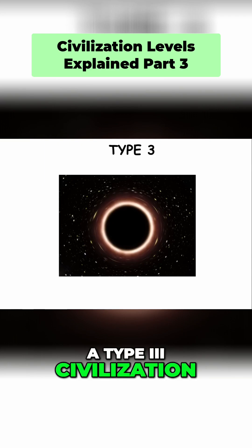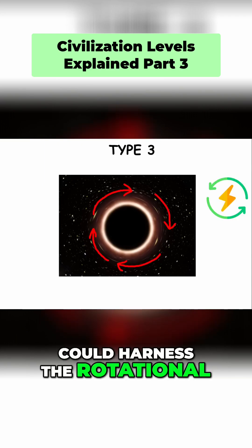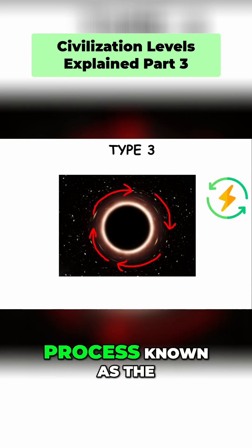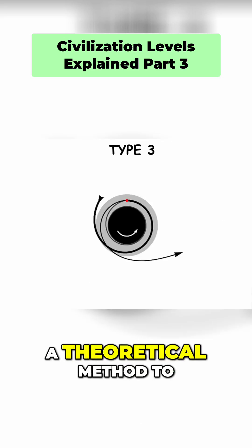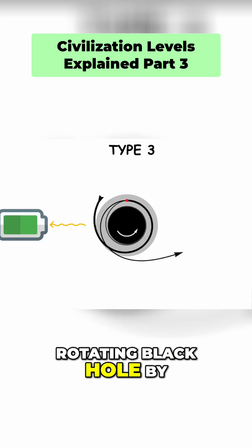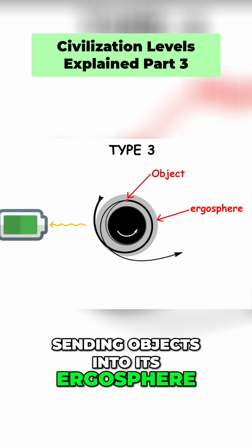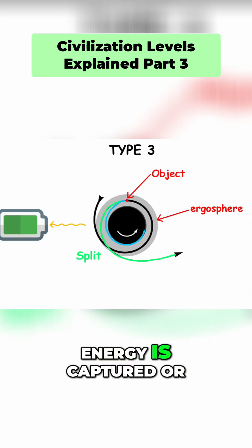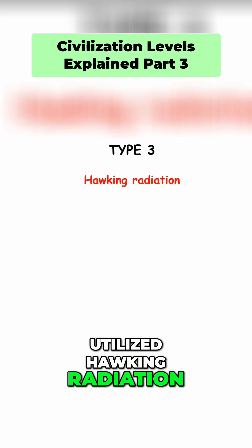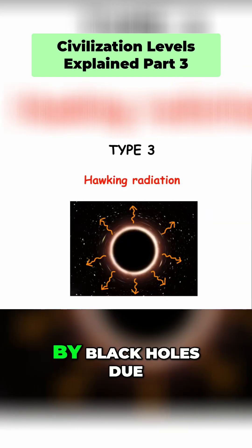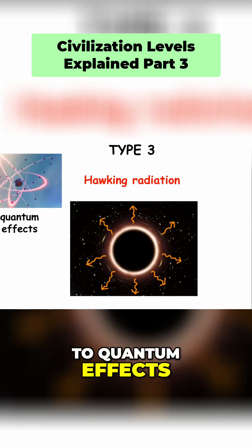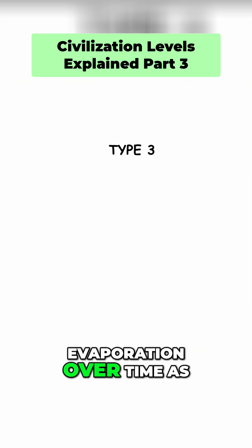Moreover, a Type 3 civilization could harness the rotational energy of a black hole through a process known as the Penrose Process, a theoretical method to extract energy from a rotating black hole by sending objects into its ergosphere, where they split, and part of their energy is captured. Or utilize Hawking radiation, the theoretical radiation emitted by black holes due to quantum effects, leading to their gradual evaporation over time as a power source.